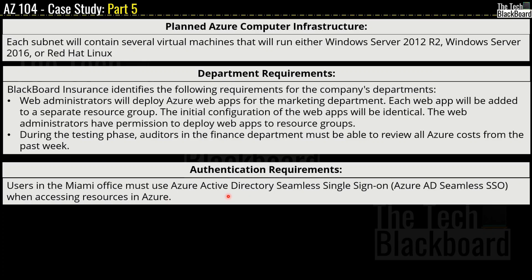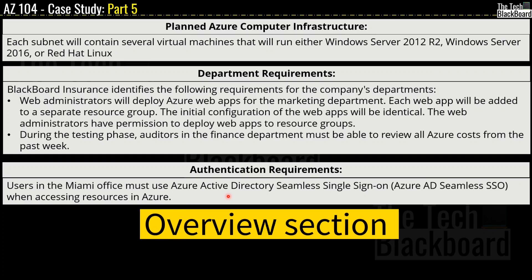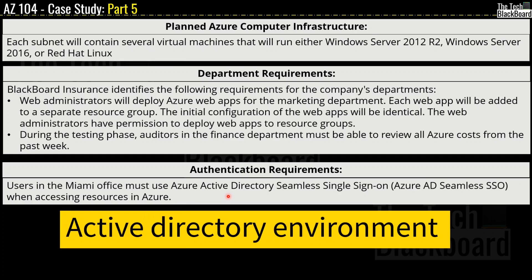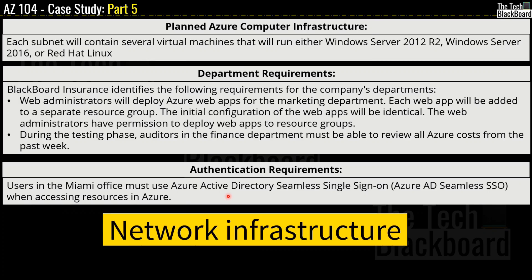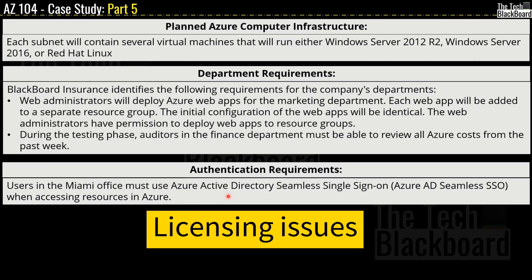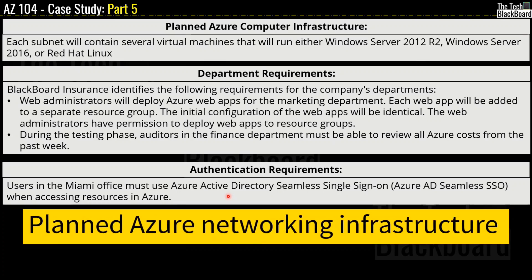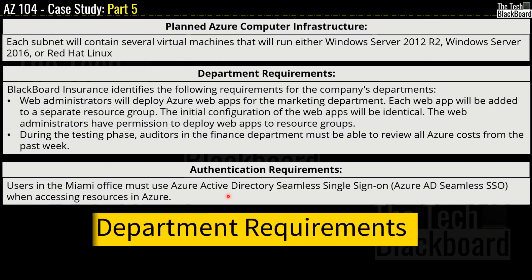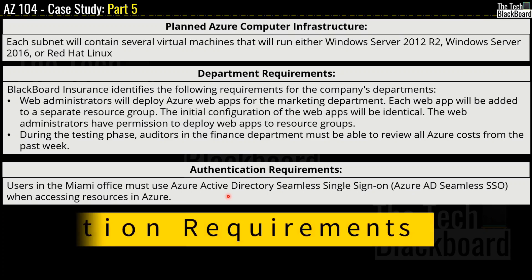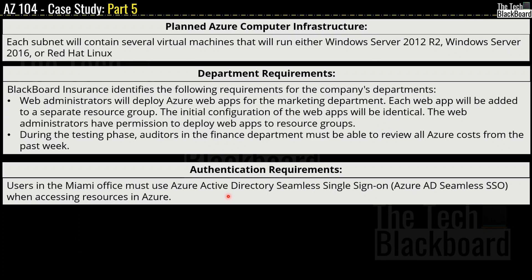That covers all the information given in the case study, which included sections on overview, Active Directory environment, network infrastructure, licensing issues, planned changes, planned Azure AD infrastructure, planned Azure networking infrastructure, planned Azure compute infrastructure, department requirements, and authentication requirements. Now let's move ahead and look at the questions based on this case study.